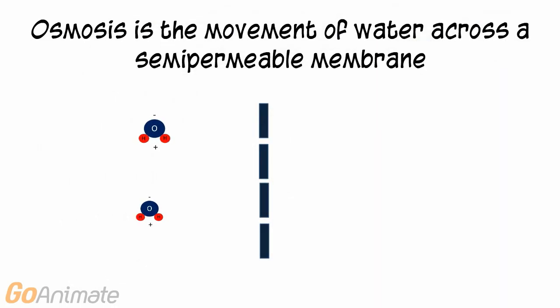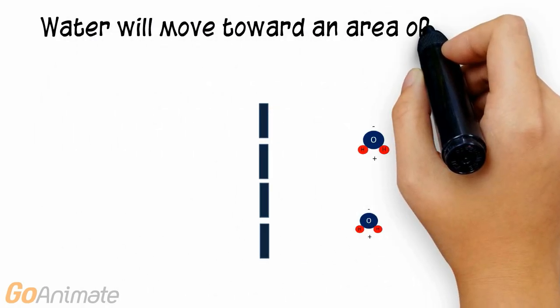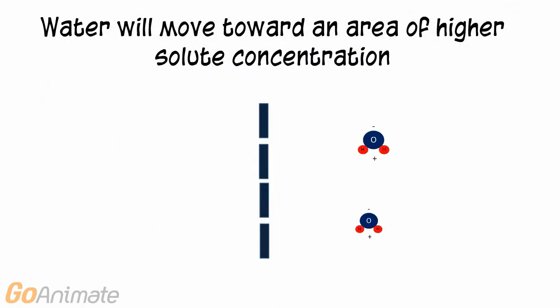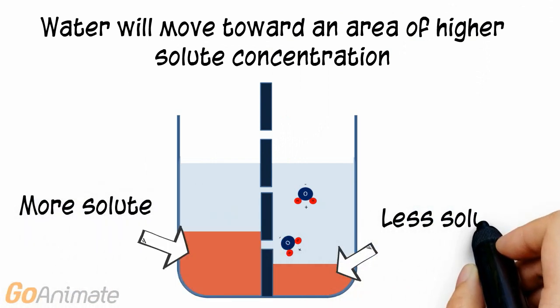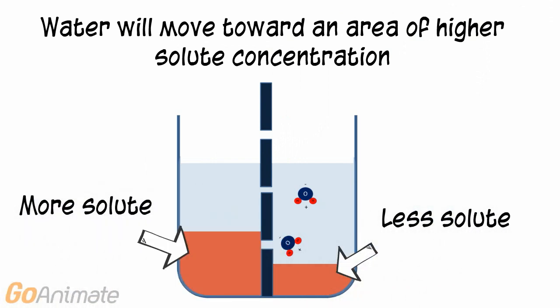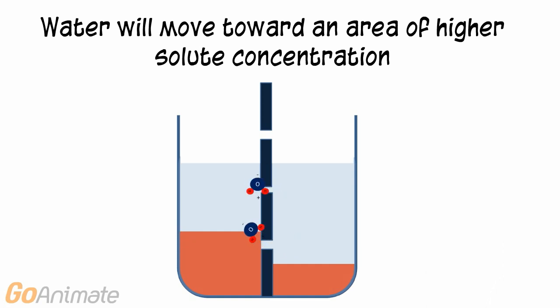In osmosis, water moves through a semi-permeable membrane, which is a membrane that allows water through but not solute. Water will move toward an area of higher solute concentration. If a beaker is separated into two compartments by a semi-permeable membrane and each compartment has a different solute concentration, water will move toward the area of higher solute concentration.